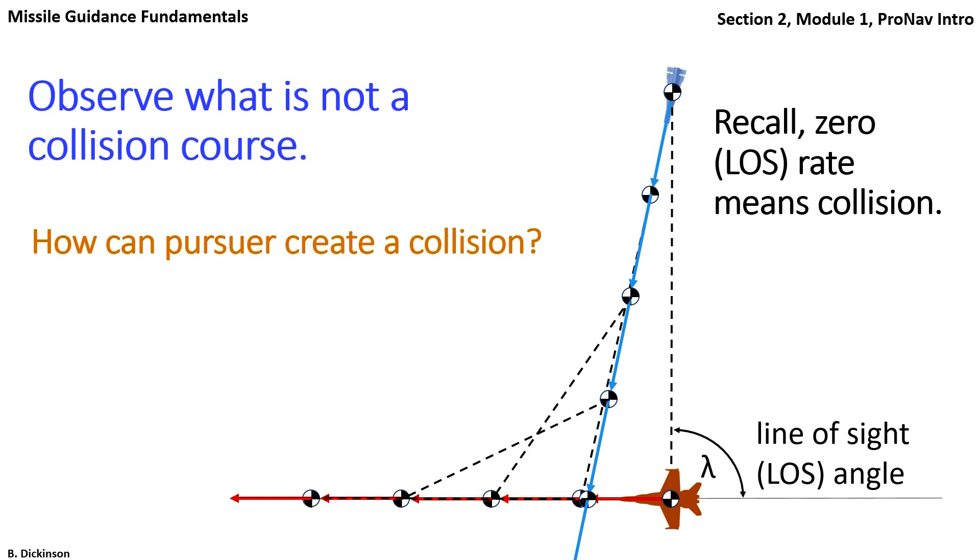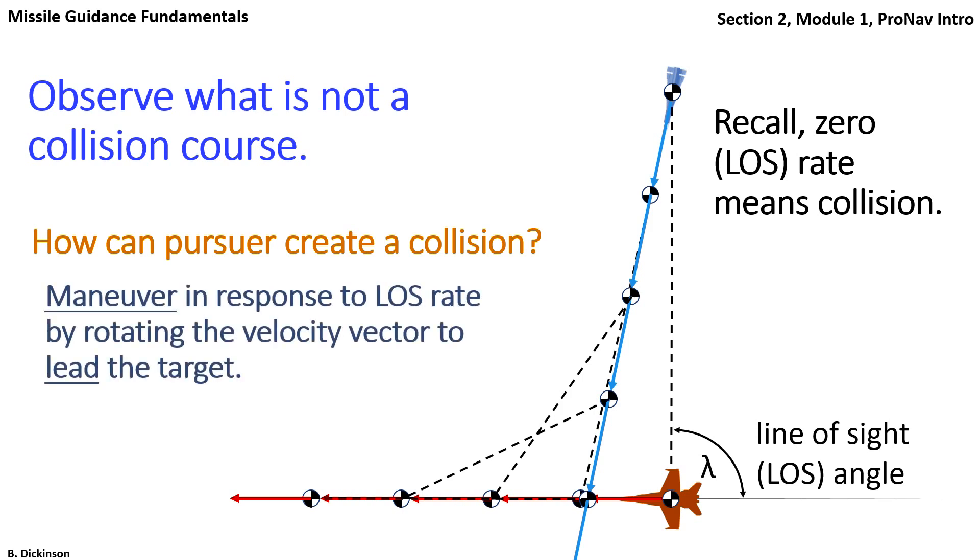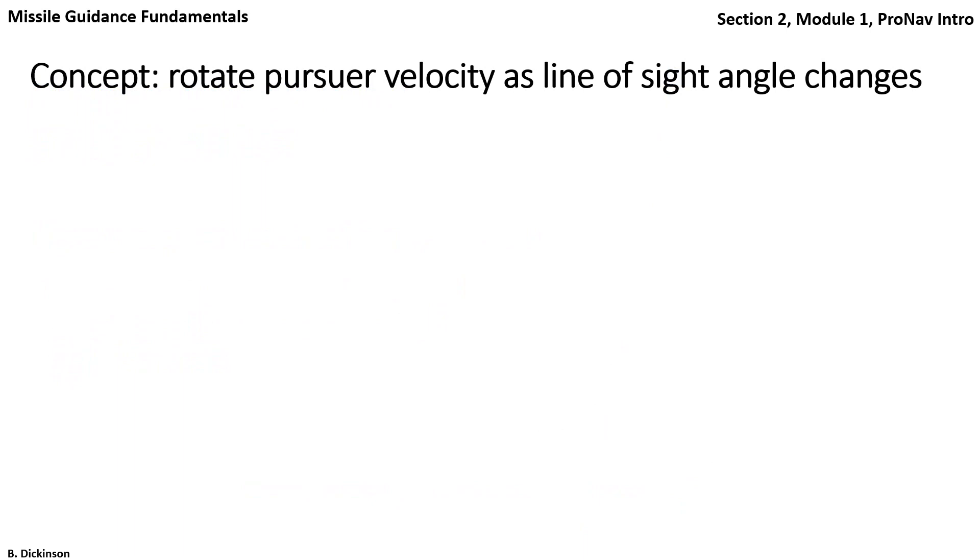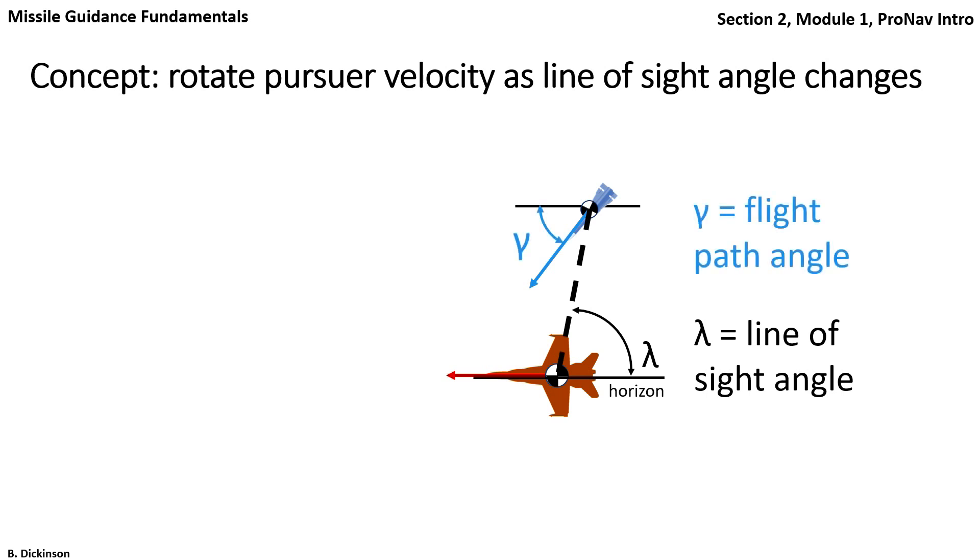Right. It should steer to our left. That is, rotate its velocity vector clockwise to achieve the correct lead angle for collision. Okay. So how should we quantify the rotation of the velocity vector? And what variable will we use to cue its rotation? The concept we're working with here is to rotate the pursuer velocity vector in response to the line of sight angle change. The pursuer velocity vector angle with respect to the horizon is called the flight path angle. And the flight path angle rate and line of sight rate are positive clockwise.